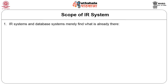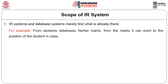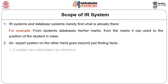IR systems and databases merely find what is already there. It is very important to know that IRS by itself does not invent anything new. Whatever is already represented in some form, IR systems can retrieve this. Additional components exist in IRS systems like inferencing rules, where by inferencing, some new information can also be retrieved. But by default, IRS will only retrieve what is already represented within the database. For example, from a student's database, his or her marks can be retrieved and we can also retrieve the position of that student in a given class.